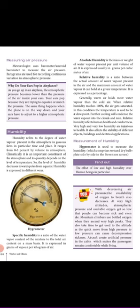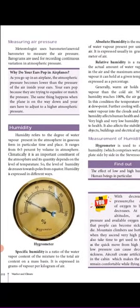Humans are not sensitive to small variations in air pressure. Next is measuring air pressure. Meteorologists use a barometer and aneroid barometer to measure the air pressure.